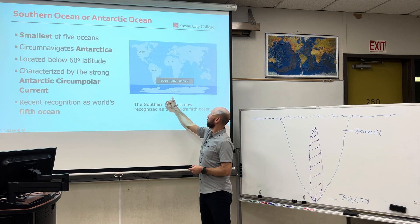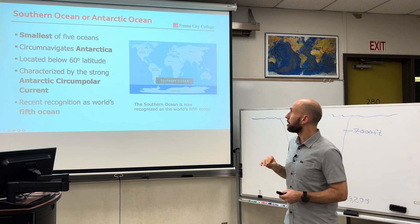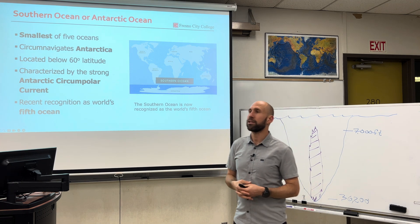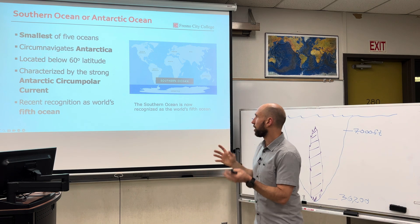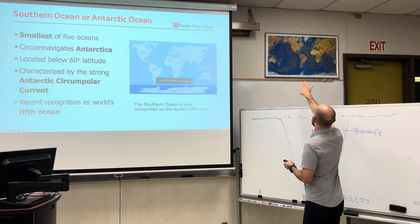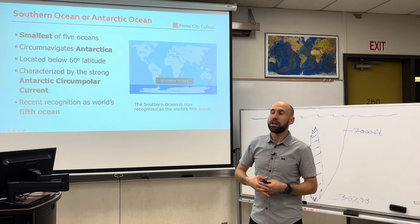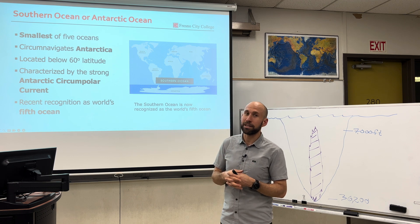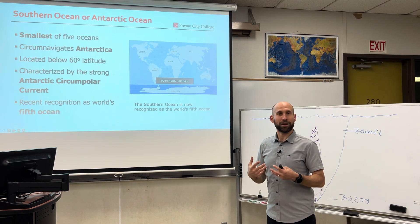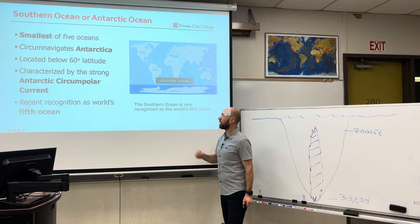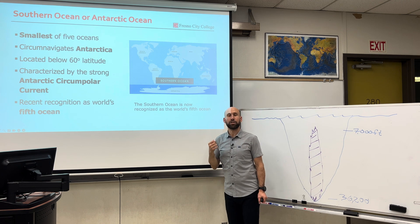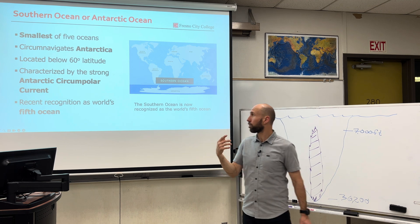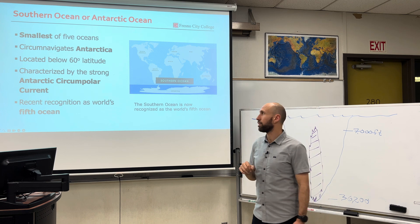The Southern Ocean circumnavigates the Antarctic region. Up until about 2000, this wasn't considered an ocean — it was considered just a collection of the Atlantic, Pacific, and Indian at the bottom. Around 2000 it was designated as its own individual ocean, adopted by the United States but not by every nation. For our intents and purposes in the United States, we recognize the Southern Ocean as the world's fifth principal ocean, characterized by strong Antarctic circumpolar currents and located below 60 degrees latitude.